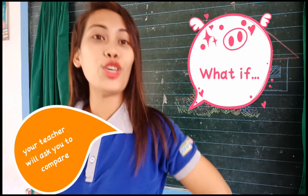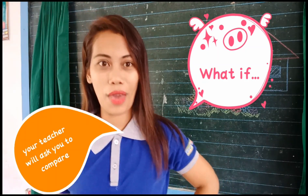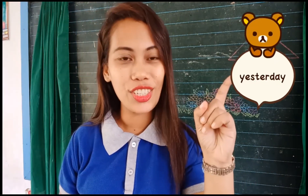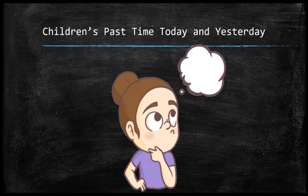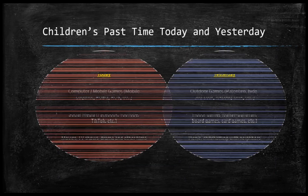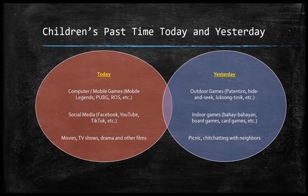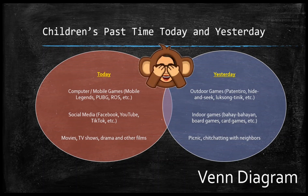What if your teacher asks you to compare yesterday and today? Suppose you are going to talk about children's pastime today and yesterday. This type of graphic organizer might be very helpful to you. This is called a Venn diagram — it is used to compare ideas. So, you have to think about pastimes today and yesterday.